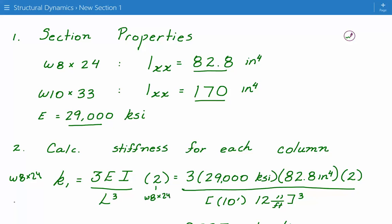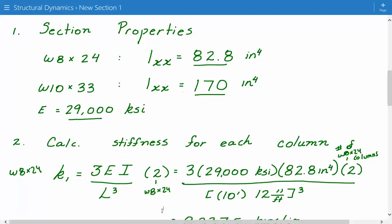So we just plug in the numbers, 3 times 29,000 KSI times 82.8 inches to the fourth power, multiplied by 2, which is the number of W8 by 24 columns. And we divide it by L cubed, which is 10 feet times 12 inches. To get it into inches, we multiply it by 12, and we cube that whole value.